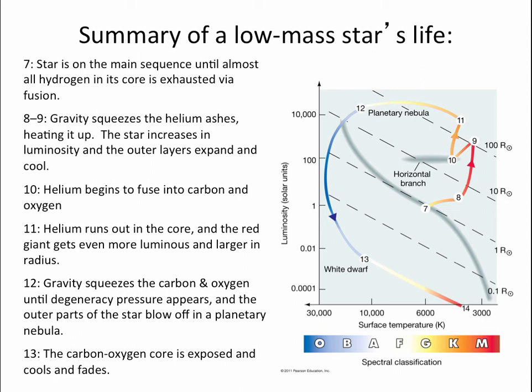And so, again, we have a core of carbon and oxygen ash, a core of ash that cannot do fusion. Gravity is trying to shrink it down. So, again, the core shrinks, the star expands, it cools off, it gets larger, becomes a red giant a second time. That's number 11 in your thing here.